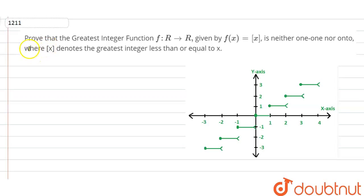Hello friends, welcome back. The question is: Prove that the greatest integer function f from R to R given by f(x) equal to [x] is neither one-one nor onto, where [x] denotes the greatest integer less than or equal to x.